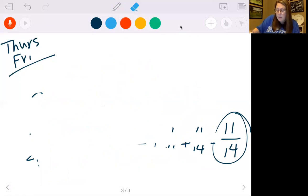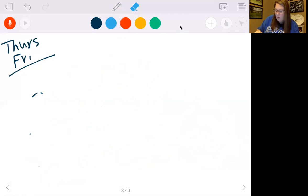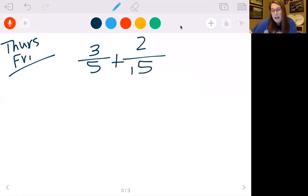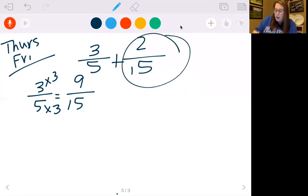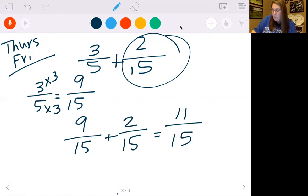Let's do one more. Let's do 3 5ths plus 2 15ths. Now ones like this, you really don't have to do the multiples because I know already that I can change 5 into 15. 5 times 3 is 15. 3 times 3 is 9. So if I can change 3 5ths to equal something over 15, I save myself a whole lot of work because this one's already done. So now I have 9 15ths plus 2 15ths. 9 plus 2 is 11 over 15. Can't reduce it, so we're done. Don't do extra work if you don't need it.